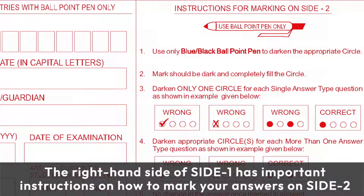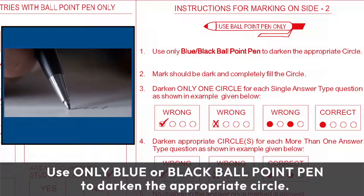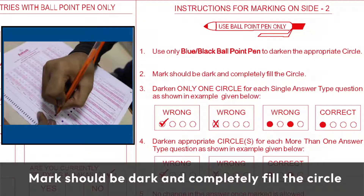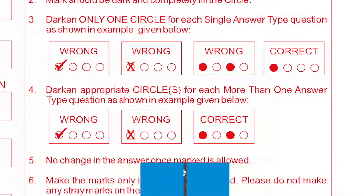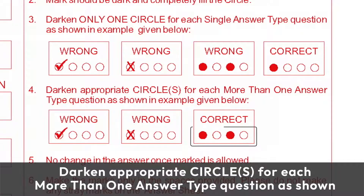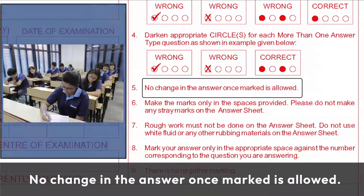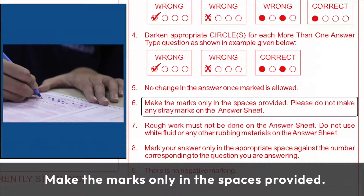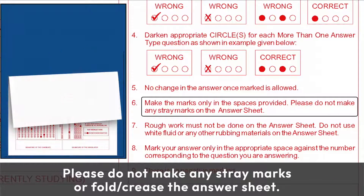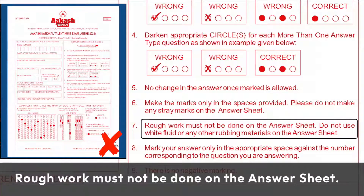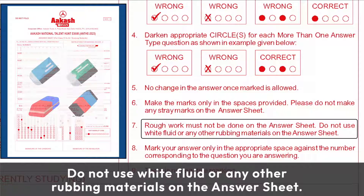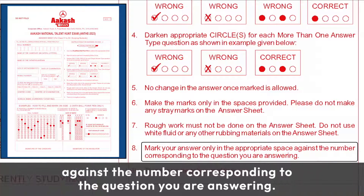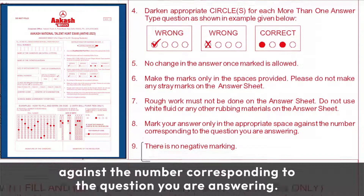The right-hand side of side 1 has important instructions on how to mark your answers on side 2. Use only blue or black ballpoint pen to darken the appropriate circle. The mark should be dark and completely fill the circle. Darken only one circle for each single-answer type question, and darken appropriate circles for each more-than-one-answer type question. No change in the answer once marked is allowed. Make marks only in the spaces provided. Do not make any stray marks or fold or crease the answer sheet. Rough work must not be done on the answer sheet. Do not use white fluid or any other rubbing materials. Mark your answer only in the appropriate space against the number corresponding to the question. There is no negative marking.